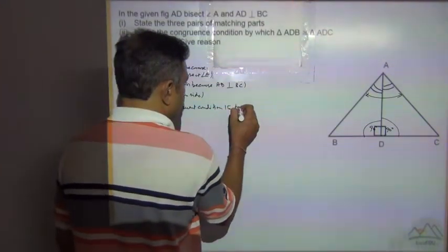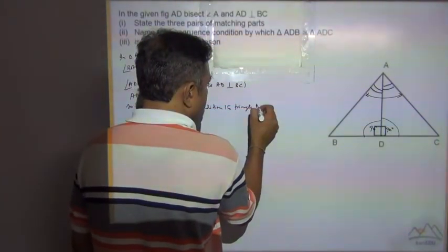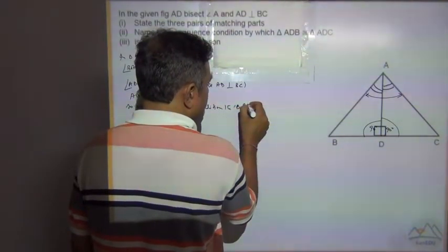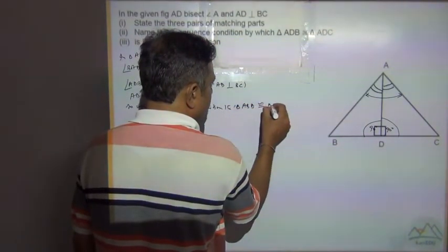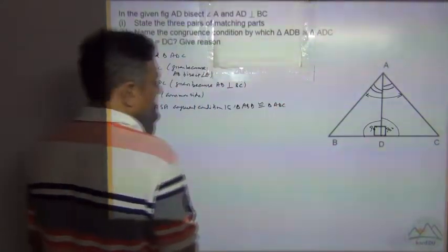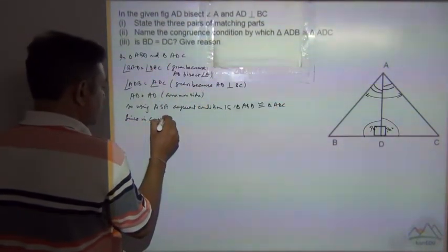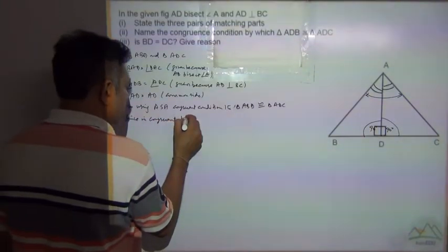So using angle-side-angle congruence condition, triangle ABD is congruent to triangle ADC.